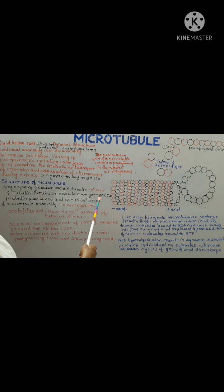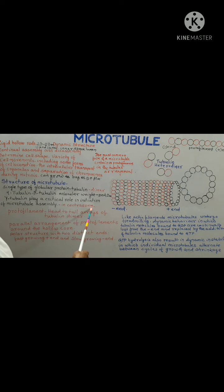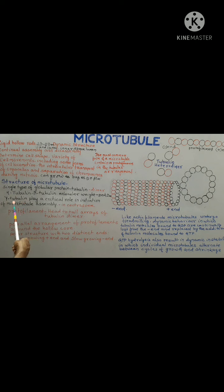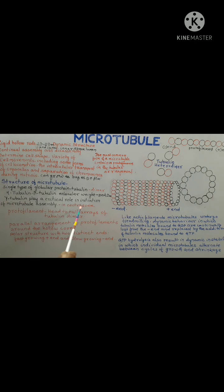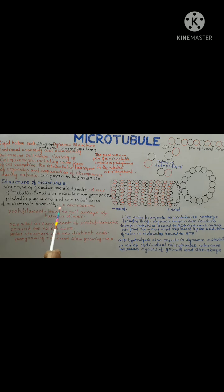Another tubulin present in the centrosome is known as gamma tubulin. Gamma tubulin plays a critical role in the initiation of microtubule assembly.